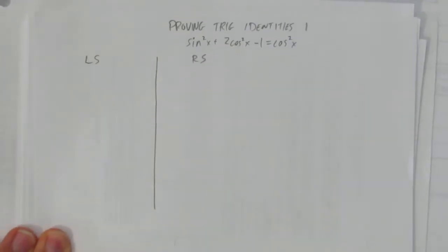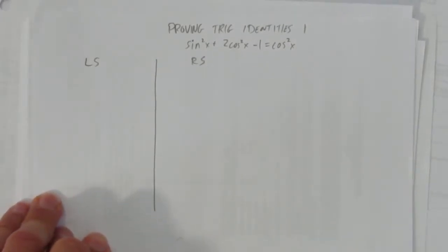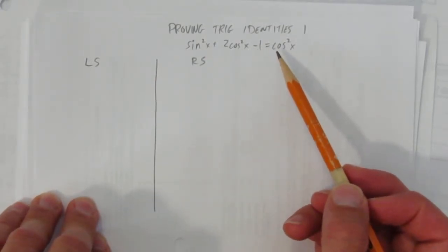This video is proving trig identities. Number one, there's other trig identities video, but this is the first one. The trig identity we're trying to prove is sin²x + 2cos²x - 1 = cos²x.